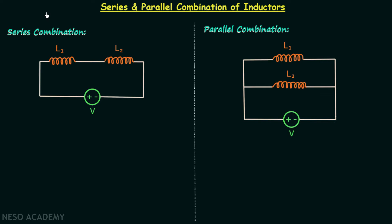Now we are going to have a discussion on series and parallel combination of inductors. We are done with series and parallel combination of resistors and capacitors. In the series combination of inductors, two or more inductors are connected one after another in the same wire, and as they are connected in the same wire, the current through all the inductors will remain the same.